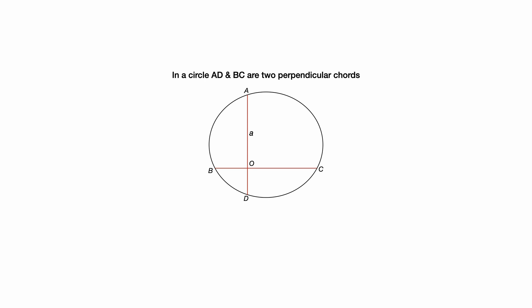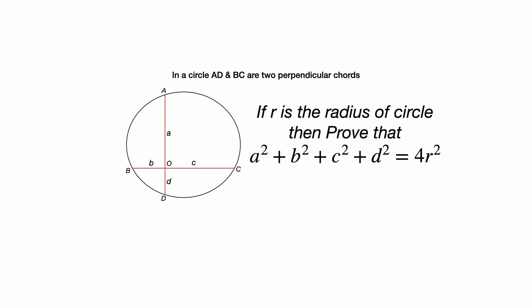OA is a, OB is b, OC is c, and OD is d. If r is the radius of the circle, then we need to prove that a² + b² + c² + d² = 4r². Let's see how we can prove this question.